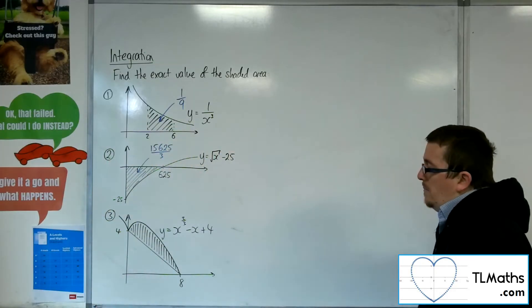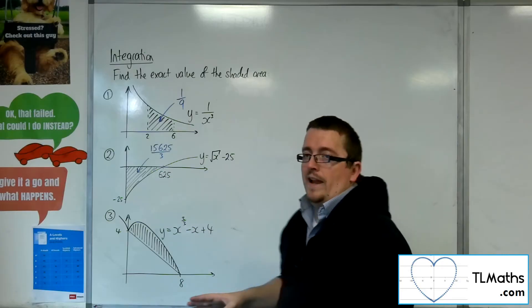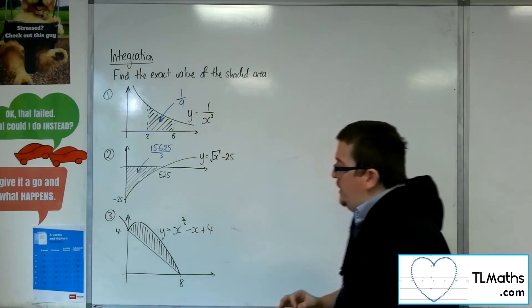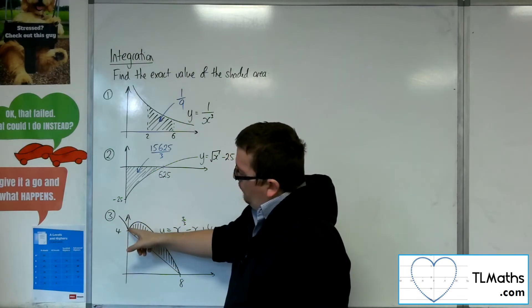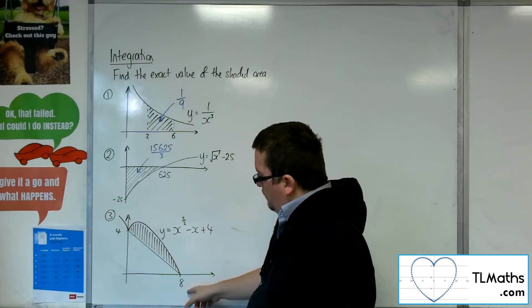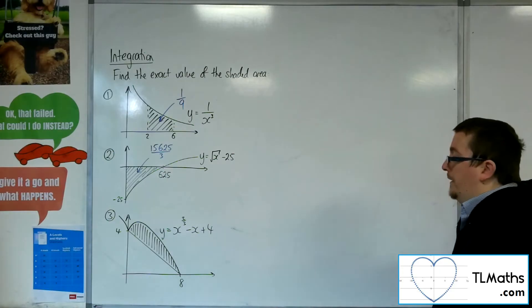So number 3. Now number 3, we've got this curve of y equals x to the 2 thirds, take away x plus 4. It's a pretty strange looking curve. It's coming down here, then it kind of bounces up, and then it goes back through the x-axis that way. You might want to have a look at it on Desmos to see what it actually looks like.